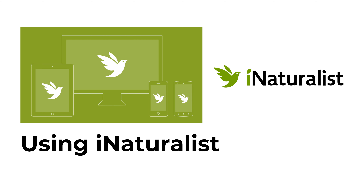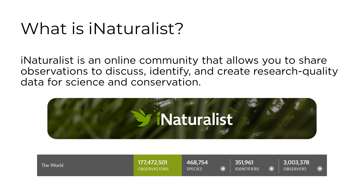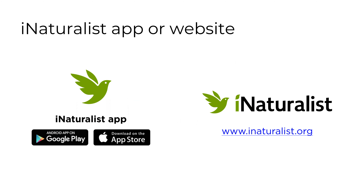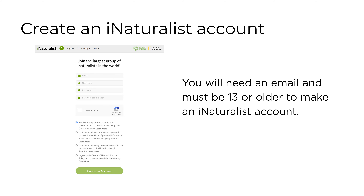Now on to using iNaturalist. iNaturalist is an online community that allows you to share observations to discuss, identify, and create research quality data for science and conservation. iNaturalist is available as an app or website — the app is available for download on both the Google Play and App Store. To use iNaturalist, you have to create an account. You will need an email and must be 13 years or older to make an iNaturalist account.